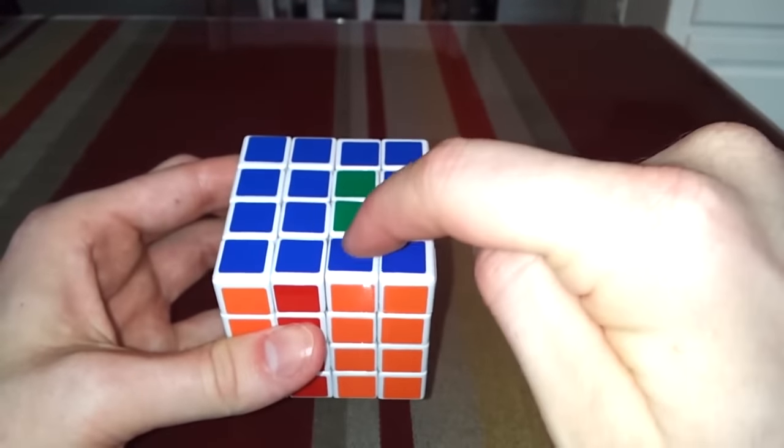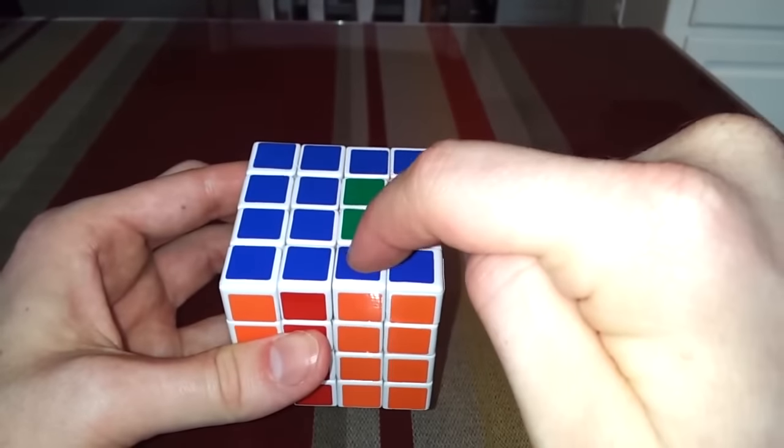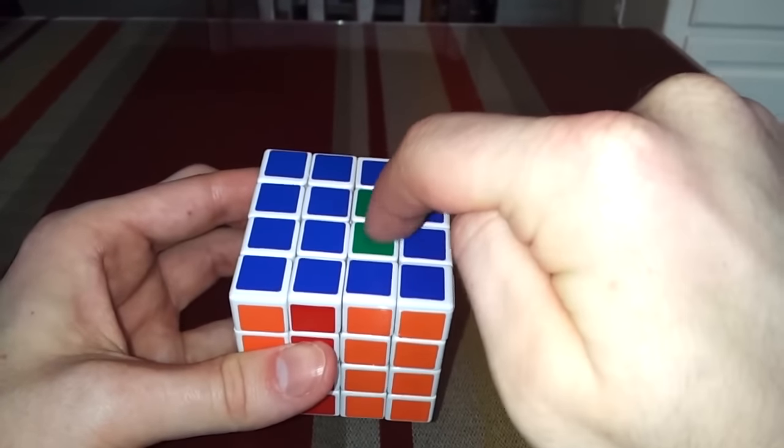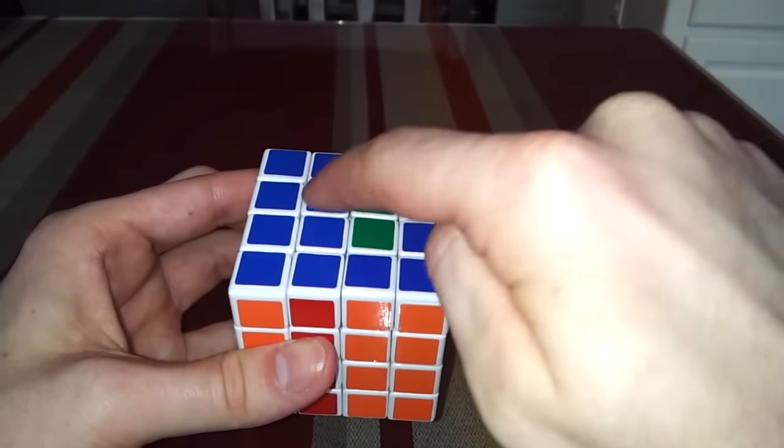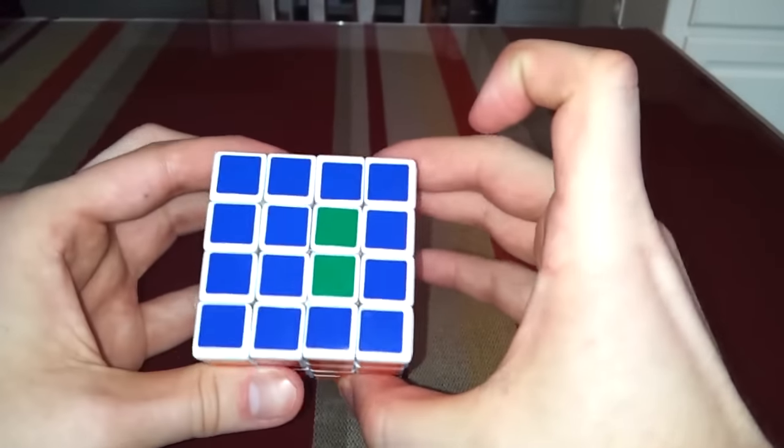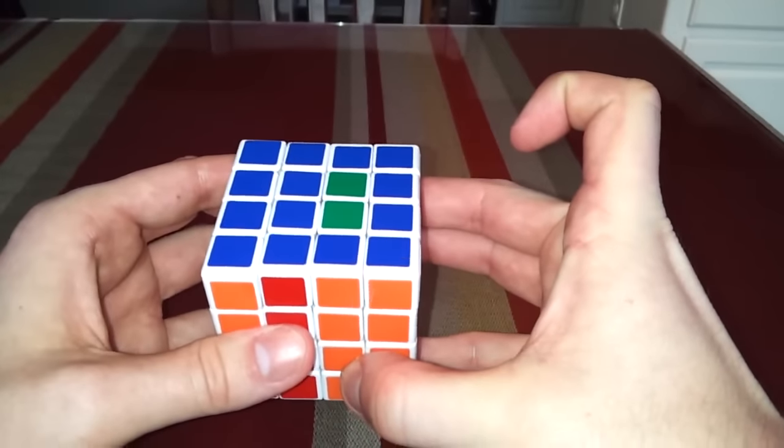So to summarize real quick, that was up twice, top, up one, top, down one, top. So now you should start seeing that this is starting to look really close to being solved.